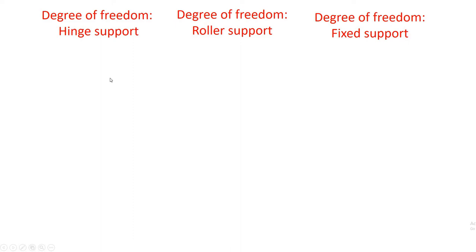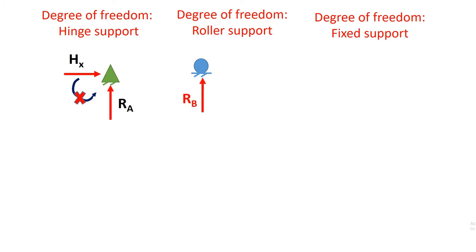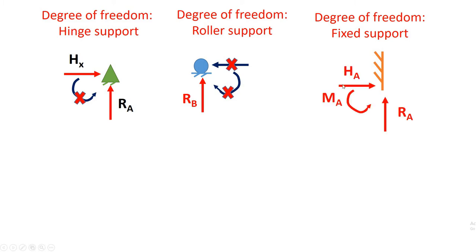Let us see the degree of freedom of each support. Hinge support has two reactions — horizontal and vertical — but hinge support cannot resist moment. Roller support has only one reaction, which is vertical; it cannot resist horizontal reaction or moment. Fixed support has all three reactions: horizontal, vertical, and moment.